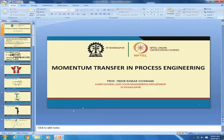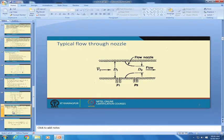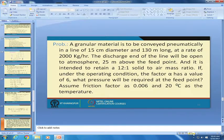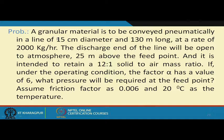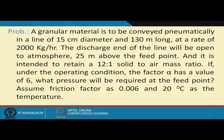The problem says: granular material is to be conveyed pneumatically in a line of 15 centimeter diameter and 130 meter long at a rate of 2000 kg per hour. The discharge end of the line will be open to atmosphere, 25 meters above the feed point, and it is intended to retain a 12-to-1 solid-to-air mass ratio.